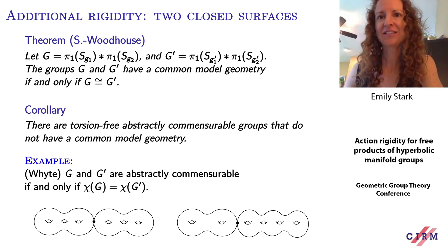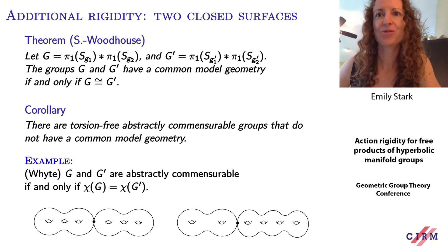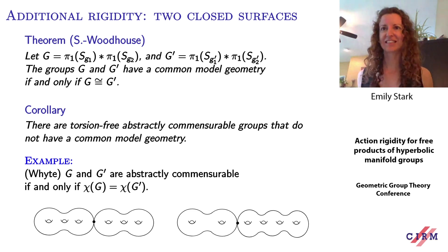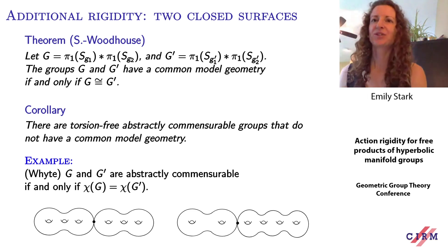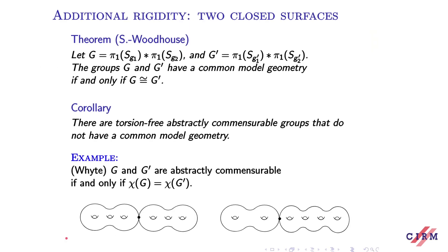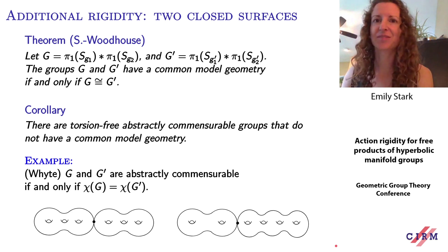To give one explicit example: the commensurability class is determined by work of Whyte, who proved that two free products of surface groups are abstractly commensurable if and only if they have the same Euler characteristics. So the fundamental group of the wedge product on the left and the fundamental group of the wedge product on the right are abstractly commensurable groups, but they do not have a common model geometry — they can't act on the same proper geodesic metric space.